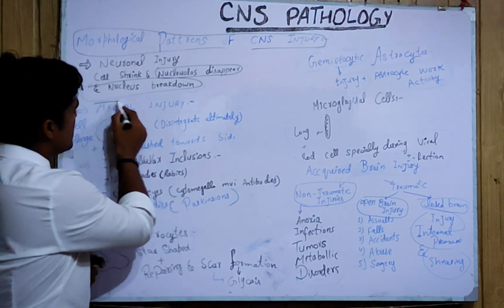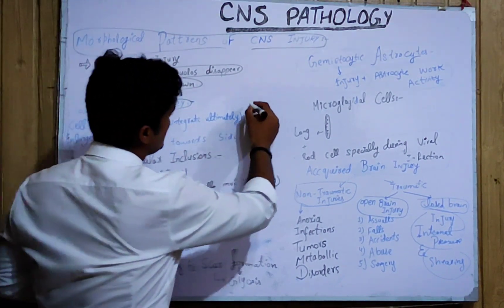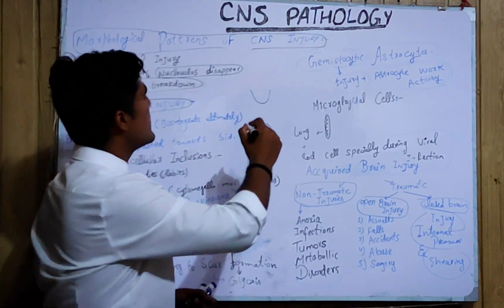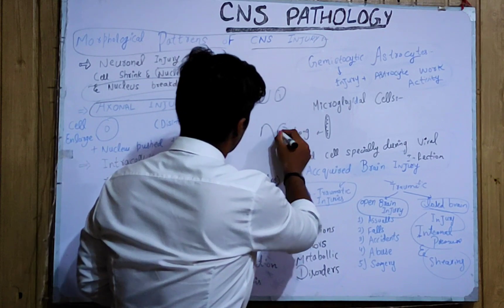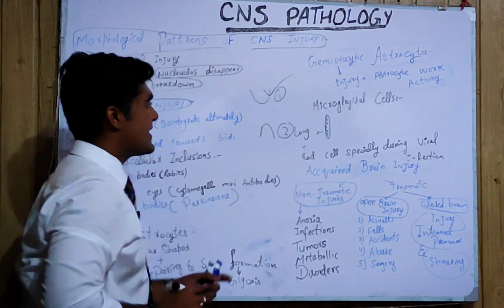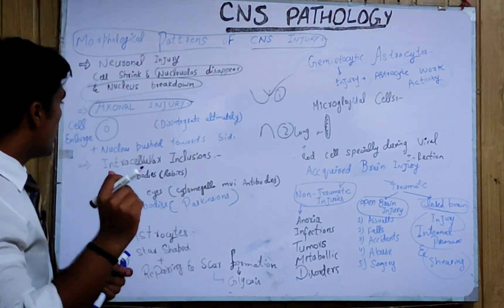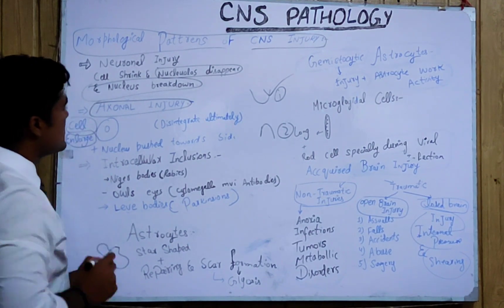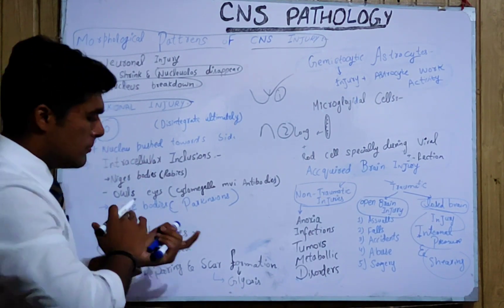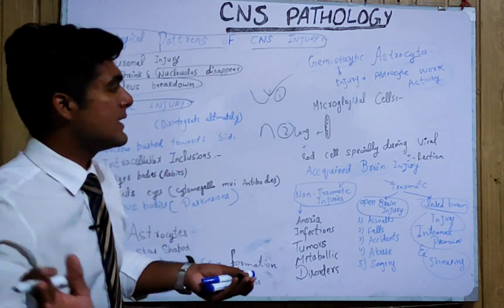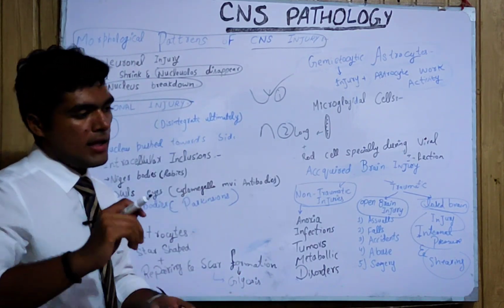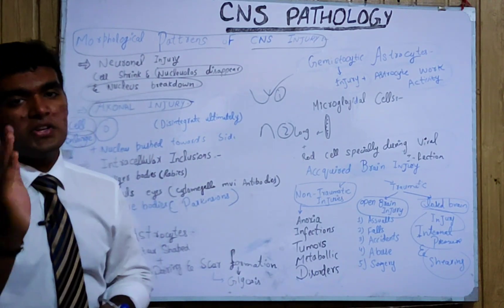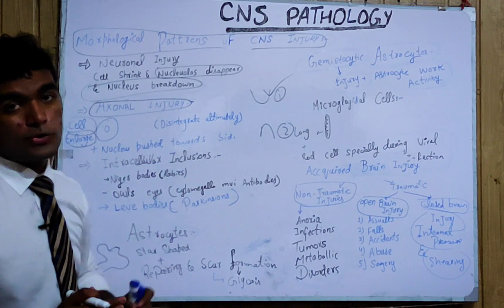In case of axonal injury, as its name shows, when we discuss a neuron we have two parts: one is the axon and one is the dendrite. In axonal injury, the axon part is injured. We have cell enlargement, by which the enlarged nucleus is pushed toward the side, and ultimately the cell disintegrates — and we call that axonal injury.